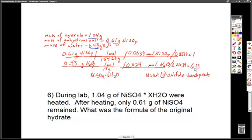This one does not work out as well as I would have hoped. We get 6.13, a ratio of 1 to 6.13. But we're going to say in this case that it's 6. So it's NiSO4 asterisk 6H2O. And we call this nickel 2 sulfate hexahydrate. Let's look at the last problem.